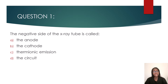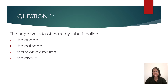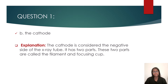Question one: the negative side of the x-ray tube is called — the anode, the cathode, thermionic emission, or the circuit? I'll give you a few minutes to decide. The answer is the cathode. The cathode is considered the negative side of the x-ray tube.